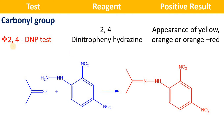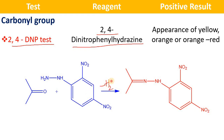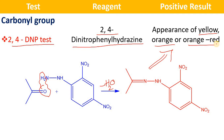Let us take the 2,4-dinitrophenylhydrazine test. The reagent is 2,4-dinitrophenylhydrazine. When you treat 2,4-DNP with aldehyde or ketone, there is a condensation reaction between the carbonyl compound and 2,4-DNP, and there is elimination of a water molecule, resulting in formation of 2,4-dinitrophenylhydrazone. The color will be yellow, orange, or orange-red, depending on the nature of the carbonyl compound.